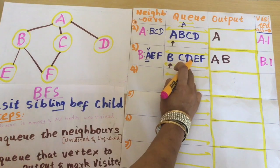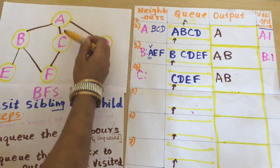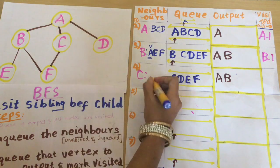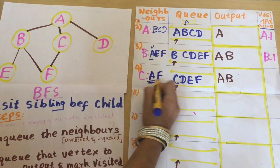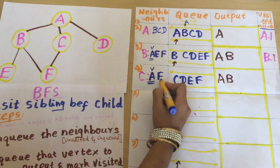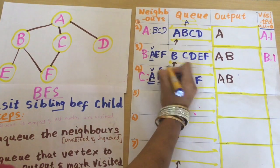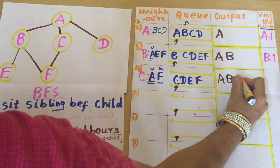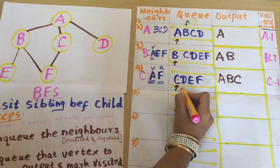The next element pointed by the queue is C. C's neighbors are A and F. I am checking whether they are in the queue and visited. A is visited, and F is already present in the queue. So I cannot enqueue A and F. I can directly dequeue C and mark it as visited.